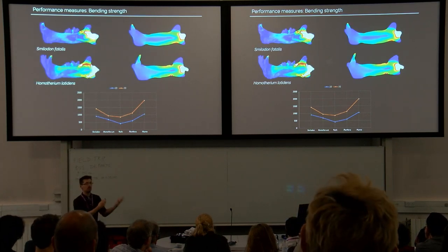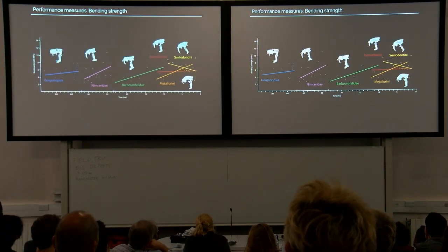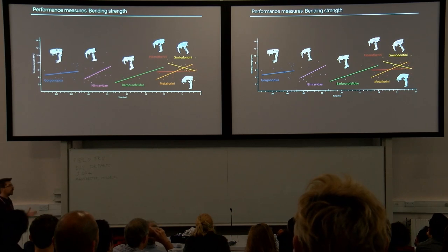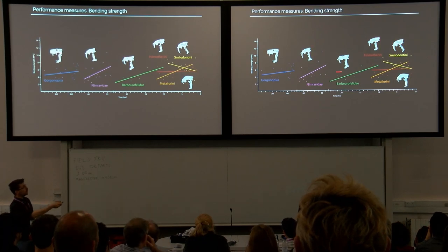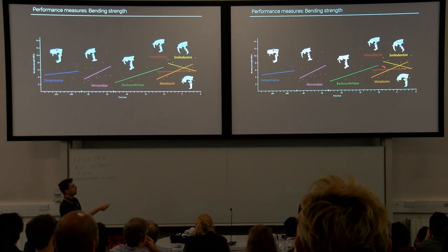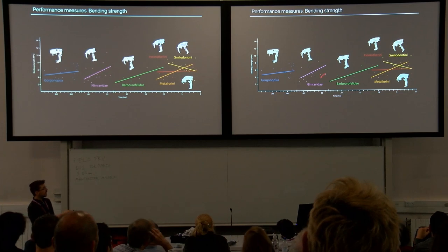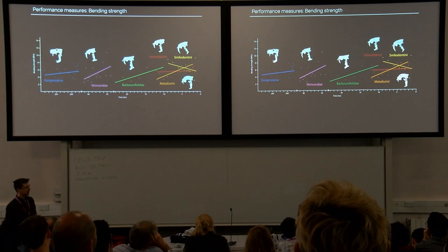Results are plotted in the same fashion, with bending strength on the y-axis — so higher is better. Again, we see generally an increase in bending strength in the earlier groups. But as soon as we get to the saber-toothed cats, we see all three of them doing things in opposite directions — with variability in increase and decrease in bending resistance — similar to what we saw with the gape angle.